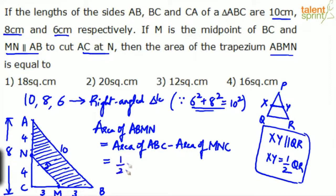Half into base into height. So half into, remember the base is 6, 3 plus 3 is 6, into height is 8. Half into 6 into 8 minus area of triangle MNC. MNC is also a right angle triangle. This is the right angle, 90 degrees. So area of triangle MNC will be half into base into height. Base is 3, NC, and height is 4.